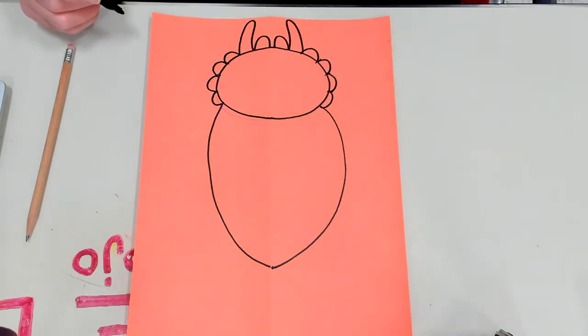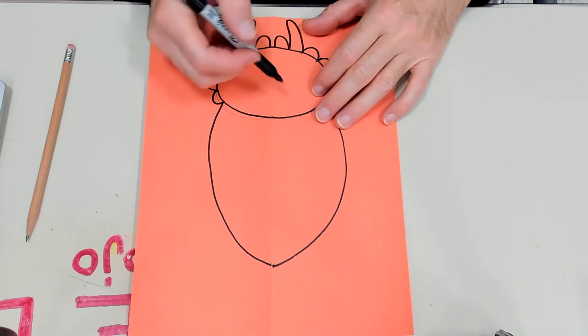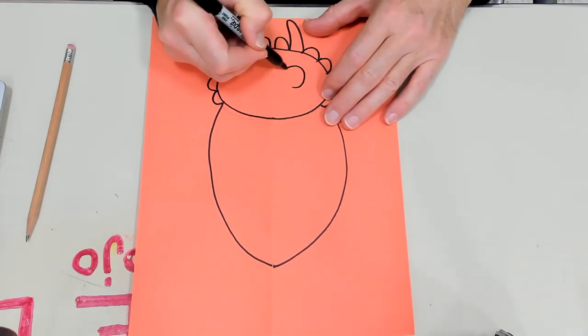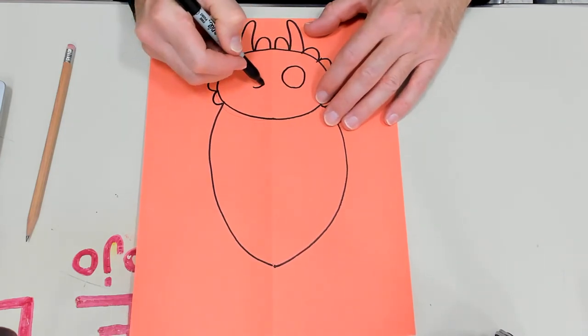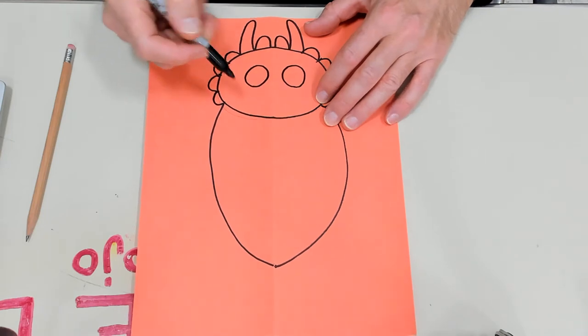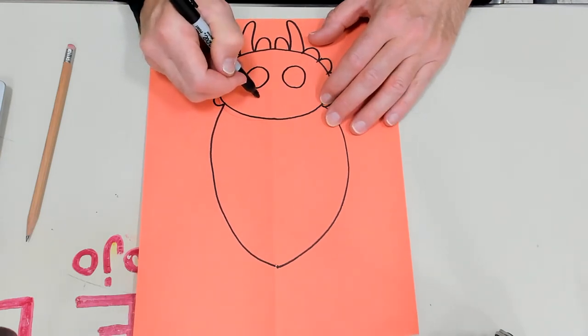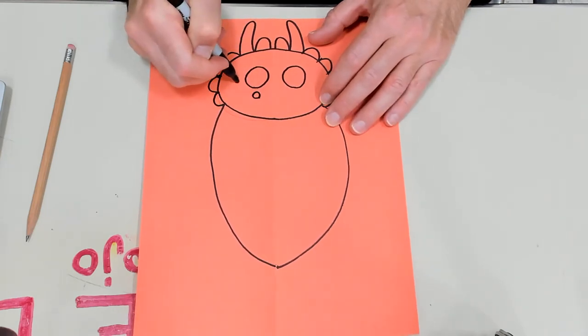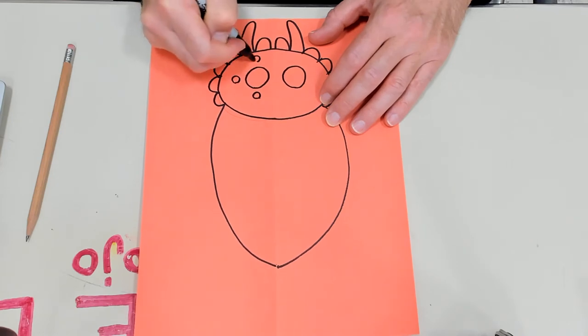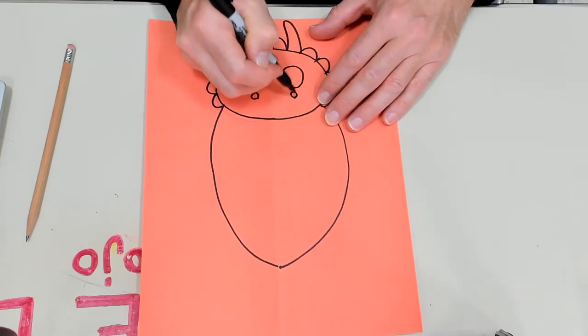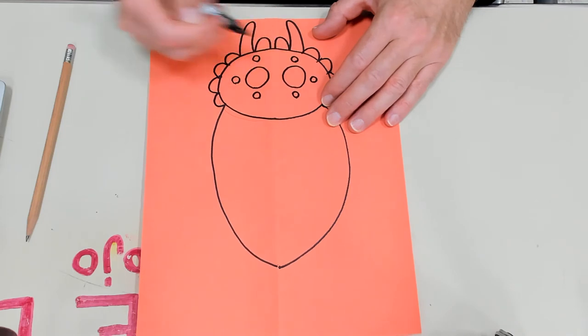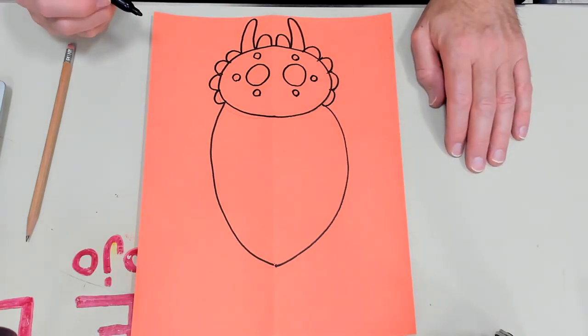Before I do the legs, I also want to add the eyes. One big eye on each side. One, two, and then three little eyes. One, two, three. One, two, three.